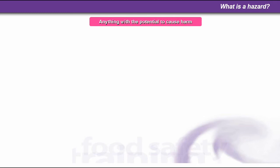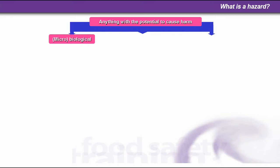So what is a hazard? Very much like health and safety, the definition of a hazard is anything with the potential to cause harm. With food safety, this could be microbiological — for example, food poisoning or foodborne disease.